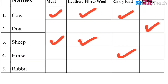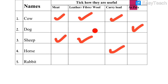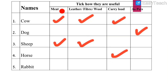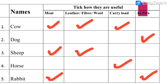Number 5: Rabbit. Can we get meat from rabbit? Yes, we can get meat from rabbit — that is also the correct answer. Can we get leather, fiber, or wool from rabbit? No, we cannot. Can rabbit help us carry load? No, that is not the correct option. Can we keep rabbit as our pet animal? Yes, we can keep rabbit as our pet animal in the house. These are the correct options with tick marks.